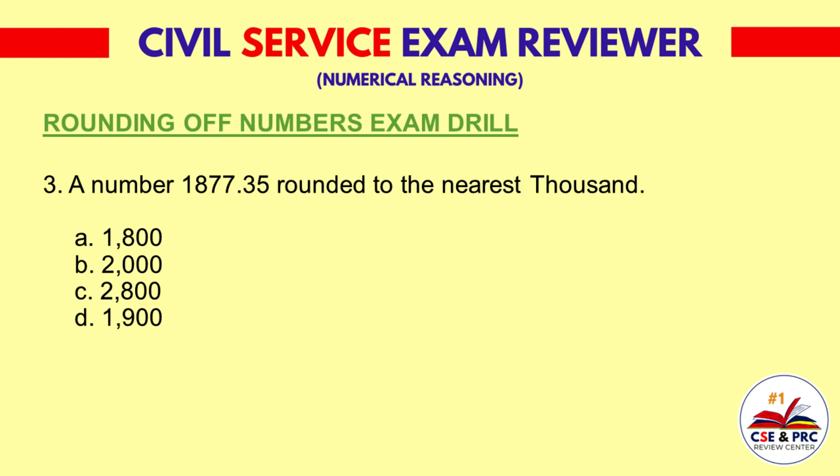Question 3: A number 1,877.35 rounded to the nearest thousand. A. 1,800, B. 2,000, C. 2,800, D. 1,900. The answer is B: 2,000.